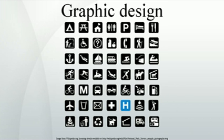Typography is the art, craft and techniques of type design, modifying type glyphs, and arranging type. Type glyphs are created and modified using a variety of illustration techniques. The arrangement of type involves the selection of typefaces, point size, tracking — the space between all characters used — kerning — the space between two specific characters — and leading, or line spacing.